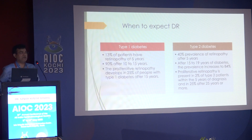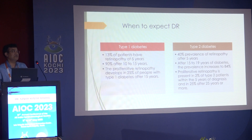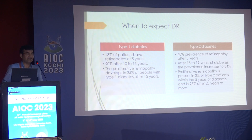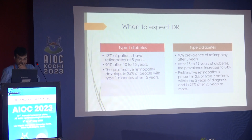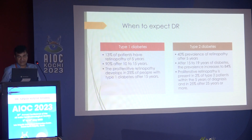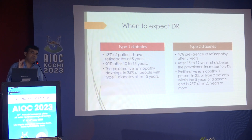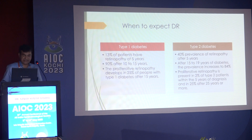When do you expect diabetic retinopathy? It is a commonly asked question — what is the diabetic age of a patient? In type 1, 13% of patients have retinopathy at 5 years, 90% at 10 to 12 years of diabetic detection, and eventually 25% of these cases after 15 years develop into PDR. Whereas in type 2, 40% prevalence after 5 years, after 15 to 19 years it goes up to 84%. As far as PDR is concerned, they have a lesser risk. The PDR incidence is higher in type 1 diabetes, up to 25% of cases at the end of 25 years.